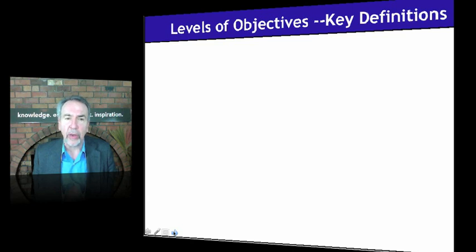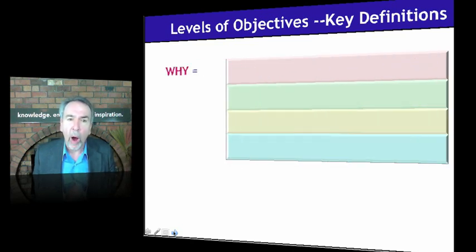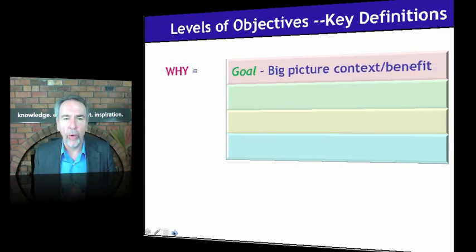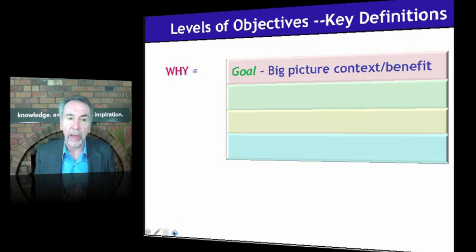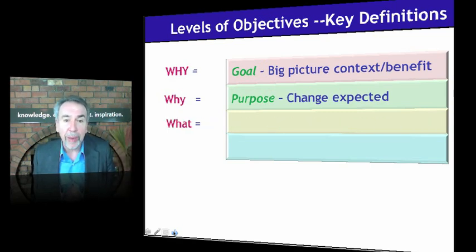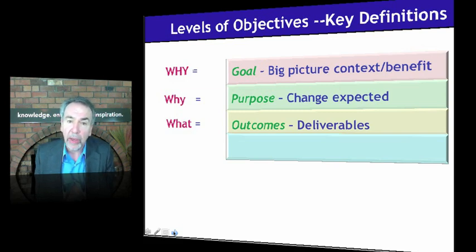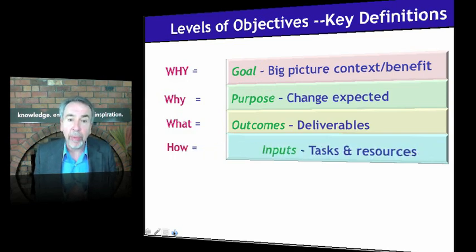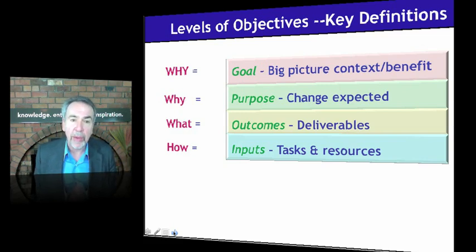Let me give you some definitions of these different levels of objectives. The big-picture why I'm going to call the goal — the big-picture context or benefit. The why beneath that I'm going to call the purpose — it's the change expected from putting the deliverables or end products in place. 'If we build it, they will come' — them coming is the purpose. The what is the outcomes: the deliverables, the specific results we can put in place given good management of our activities and resources. The how then becomes inputs — the tasks and resources to get there.